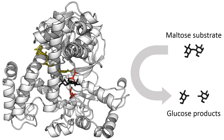Some of these enzymes have proofreading mechanisms. Here, an enzyme such as DNA polymerase catalyzes a reaction in a first step and then checks that the product is correct in a second step. This two-step process results in average error rates of less than one error in 100 million reactions in high-fidelity mammalian polymerases. Similar proofreading mechanisms are also found in RNA polymerase, aminoacyl tRNA synthetases, and ribosomes. Conversely, some enzymes display enzyme promiscuity, having broad specificity and acting on a range of different physiologically relevant substrates. Many enzymes possess small side activities which arose fortuitously, which may be the starting point for the evolutionary selection of a new function.